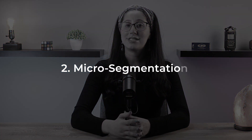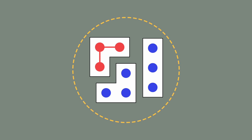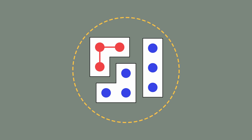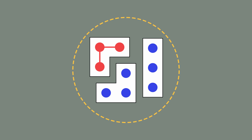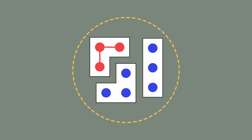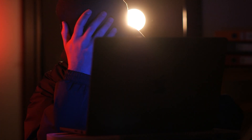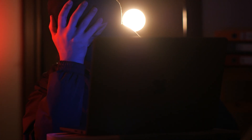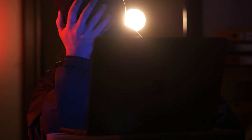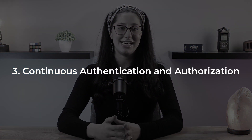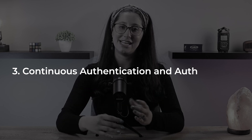Next, you have micro-segmentation. Instead of relying on a single perimeter, Zero Trust emphasizes the implementation of micro-segmentation, dividing the network into smaller isolated segments. This limits the movement of attackers, containing the impact of a potential breach.